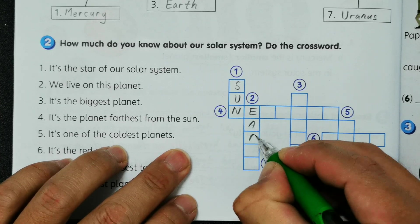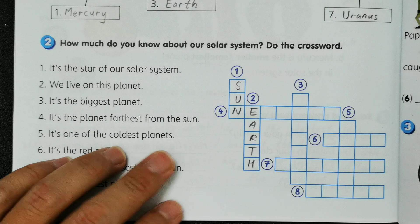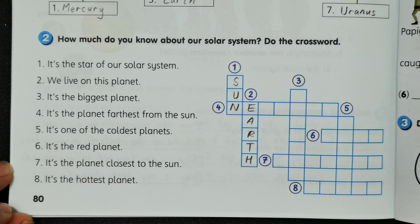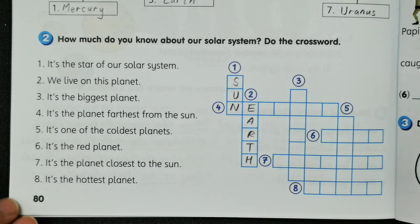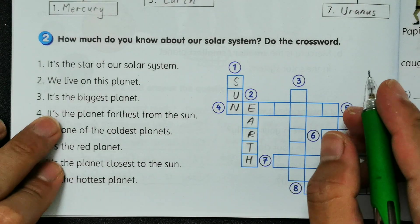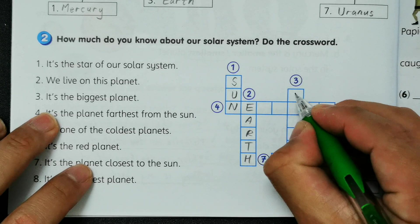And then we have number three, it's the biggest planet in our solar system, so it is called Jupiter. So this is vertical, so J-U-P-I-T-E-R.